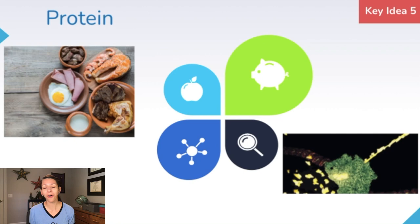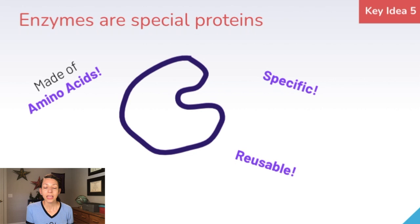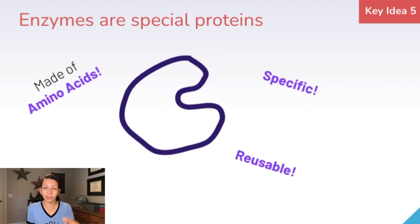An important special type of protein is enzymes. Enzymes are made of amino acids, they're specific — having a specific structure for a very specific reaction — and they are reusable. After a reaction, enzymes remain unchanged. Enzymes work as catalysts, speeding up chemical reactions. Other times you can think of them like molecular scissors that cut different molecules apart.